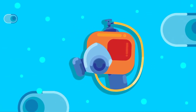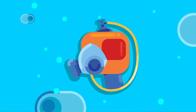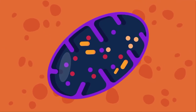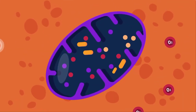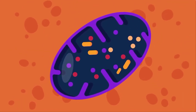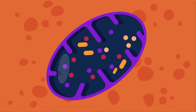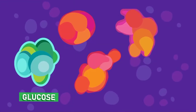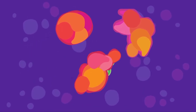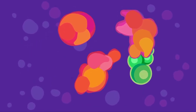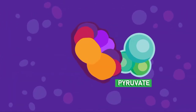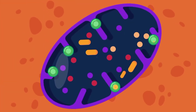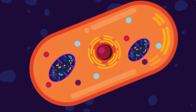Aerobic respiration is the process by which oxygen-breathing creatures turn fuel, such as fats or sugars, into energy by the help of oxygen. The key organelle inside cells for aerobic respiration is the mitochondria, where the glucose molecule from the food goes through a multi-step process such as glycolysis, Krebs cycle, and electron transport chain.